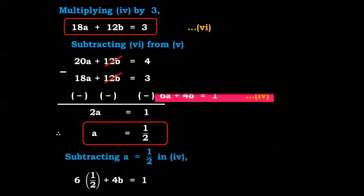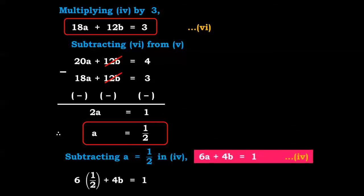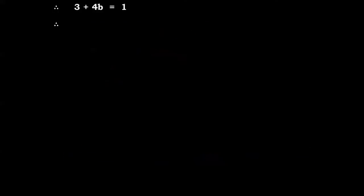Now substituting a equals 1 upon 2 in equation number 4: 6 into 1 upon 2 plus 4b equals 1. 6 into 1 upon 2 gives 3, so 3 plus 4b equals 1. Therefore 4b equals 1 minus 3, so 4b equals minus 2, giving b equals minus 1 upon 2.